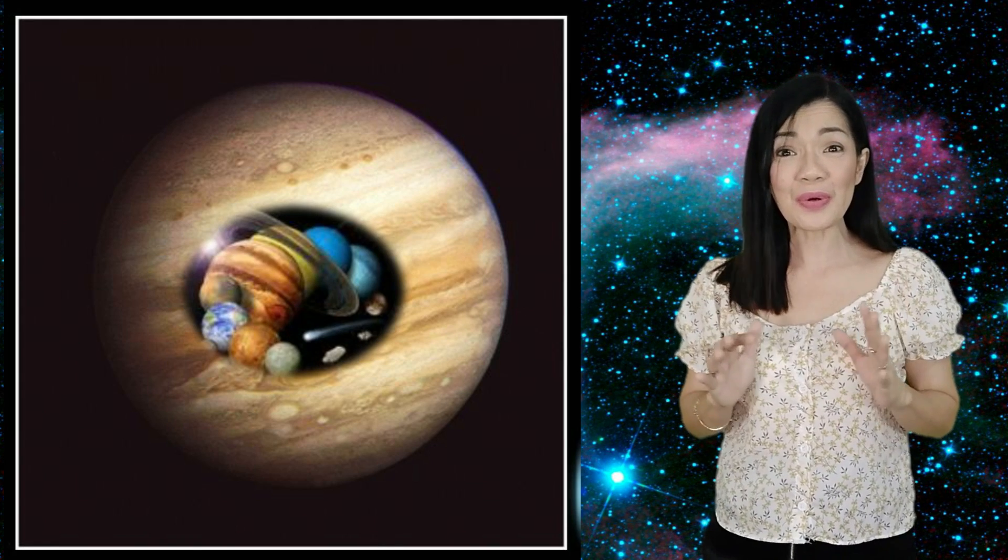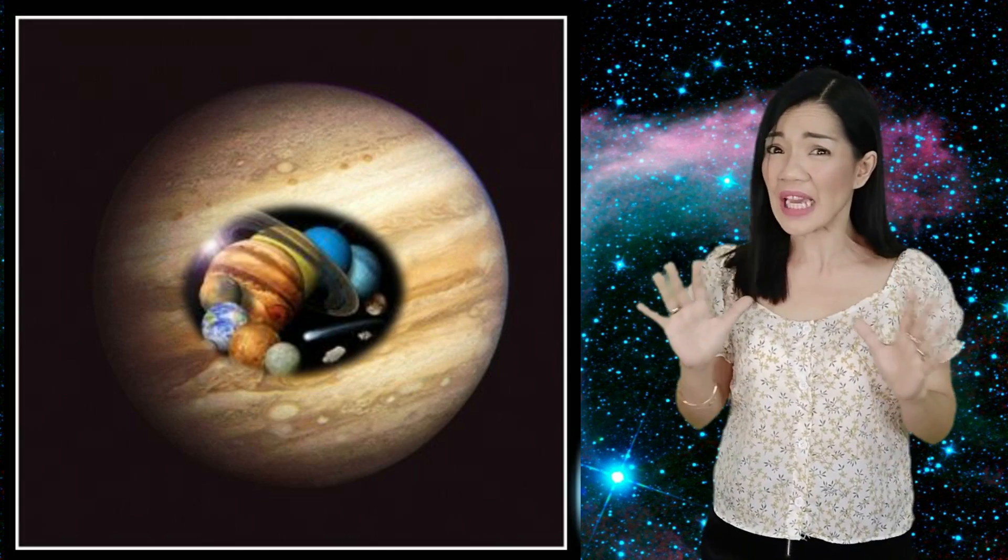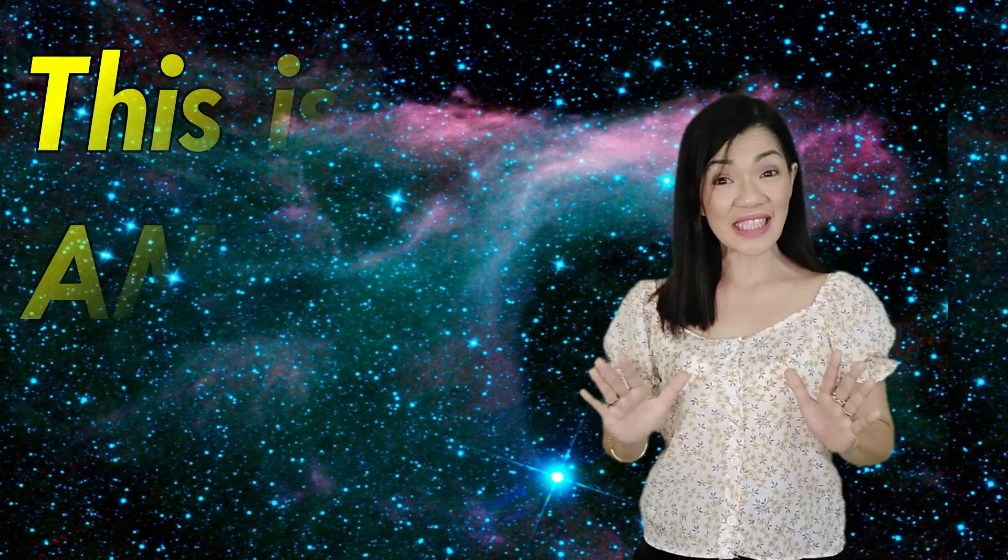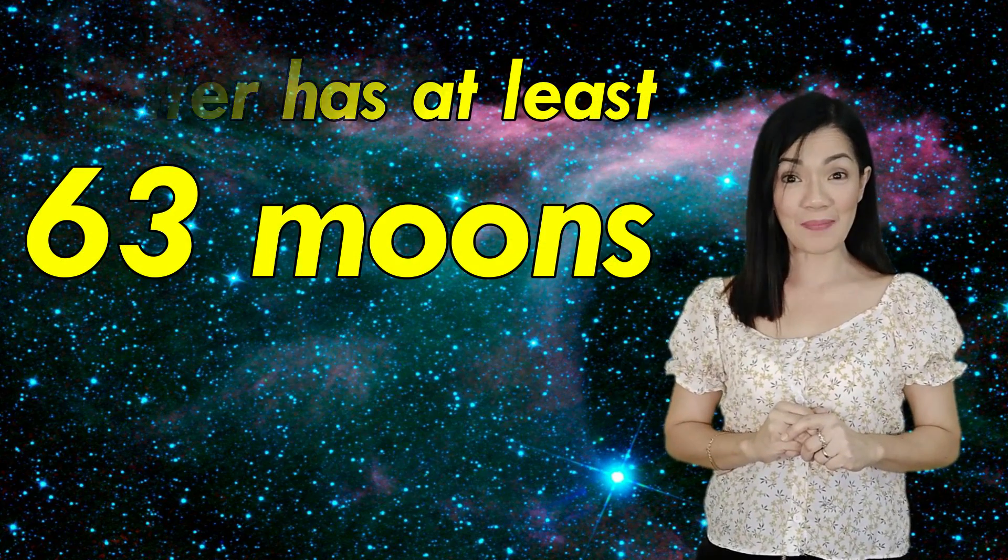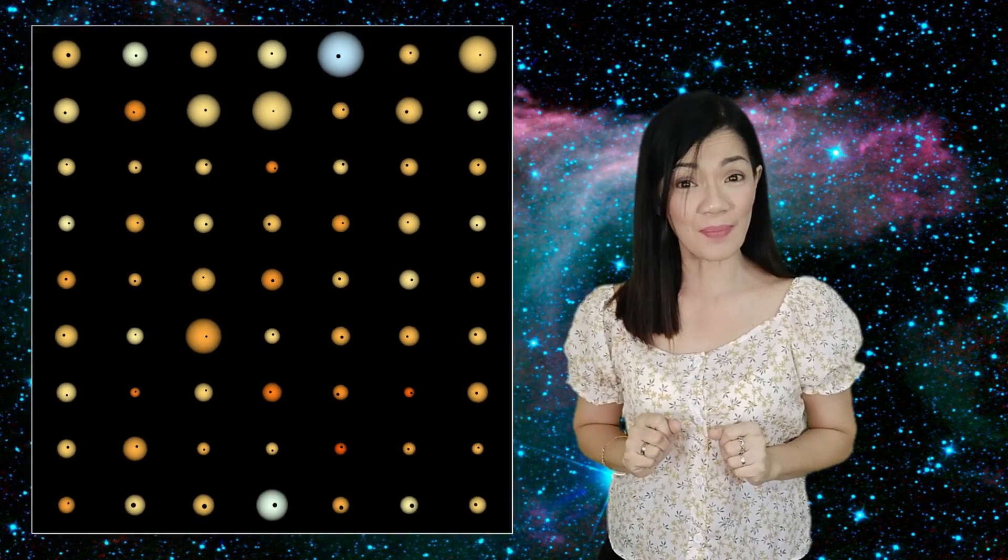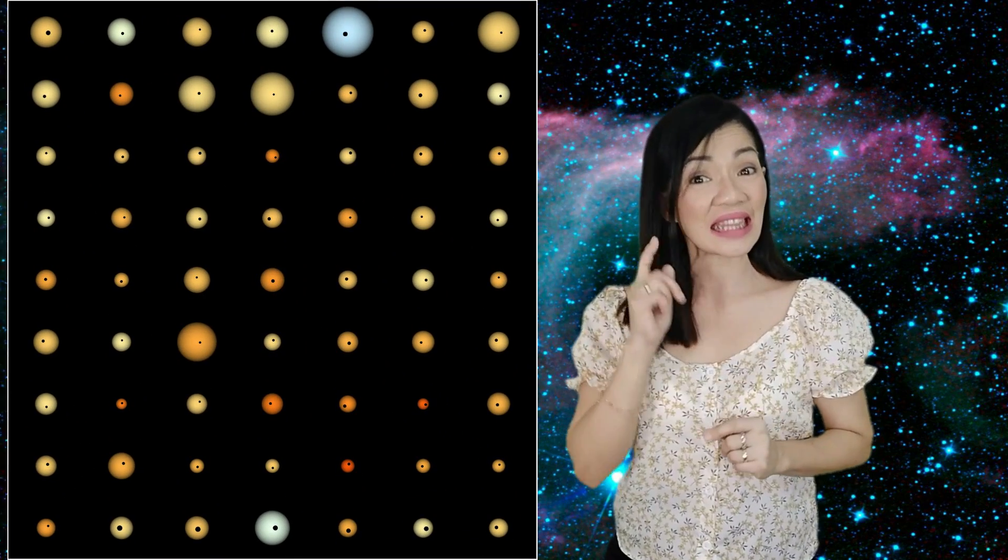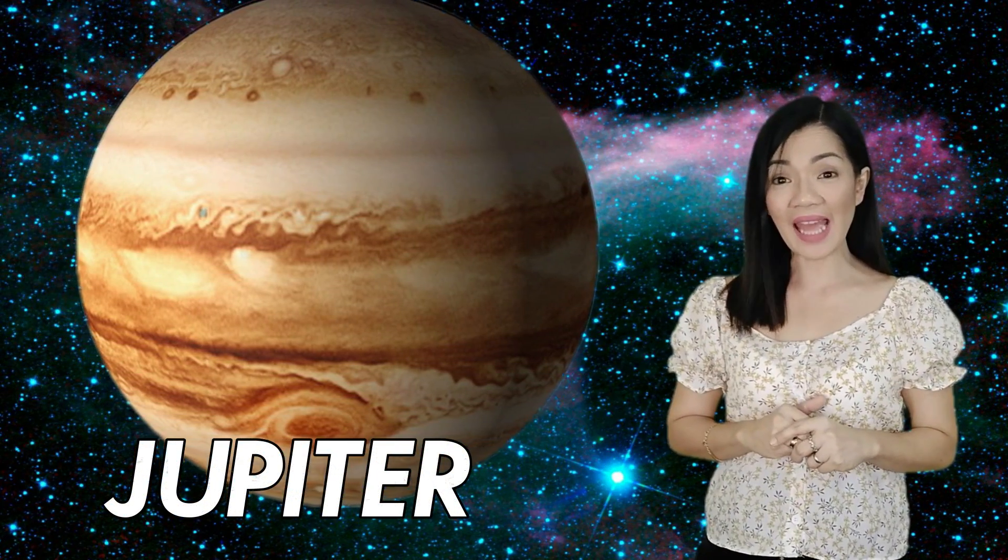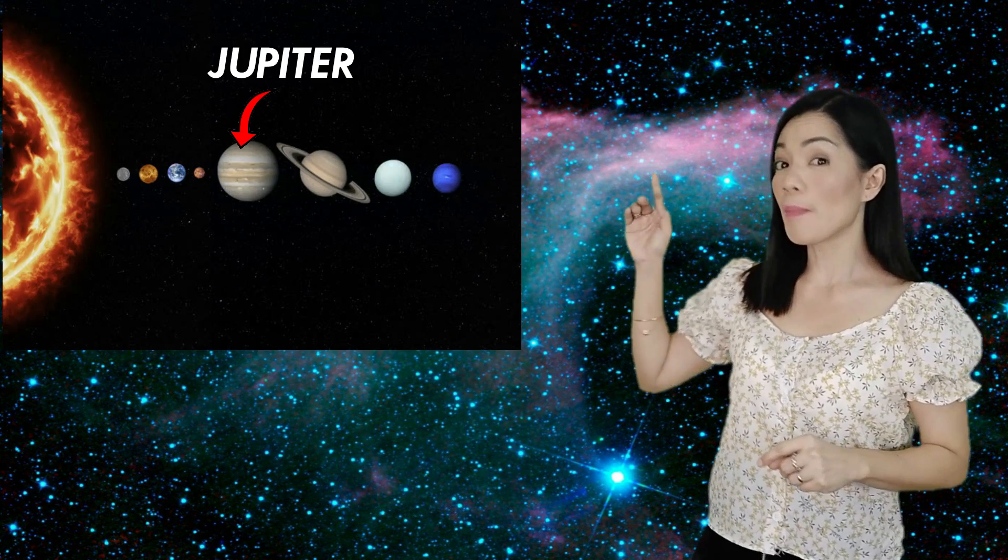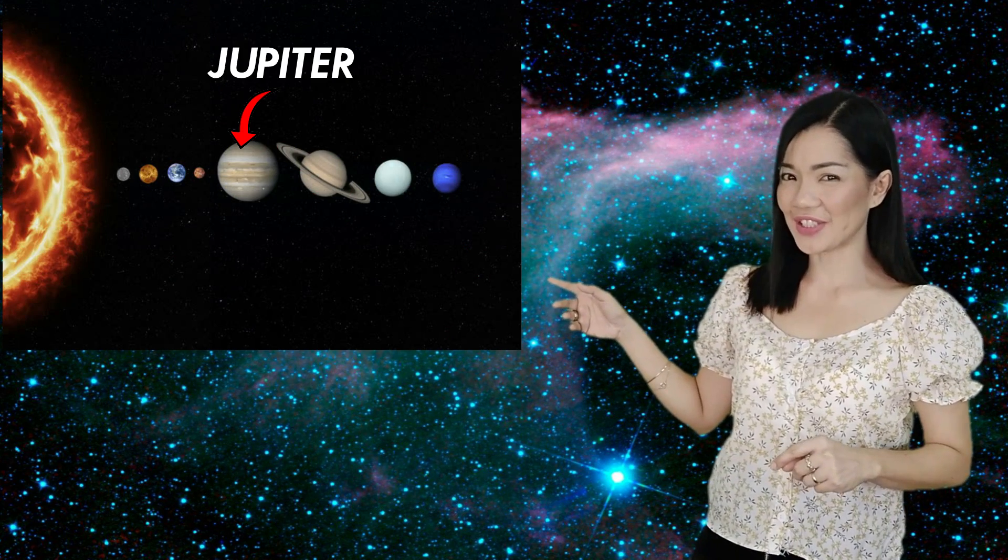Jupiter is huge. It is the biggest planet in the solar system. In fact, all the other planets could fit in Jupiter and there would be extra room. Imagine how big Jupiter is. And this is amazing. Jupiter has at least 63 moons. At least 63 moons. And we say at least because they are still discovering more. Again, Jupiter is a giant gas planet in between Mars and Saturn.